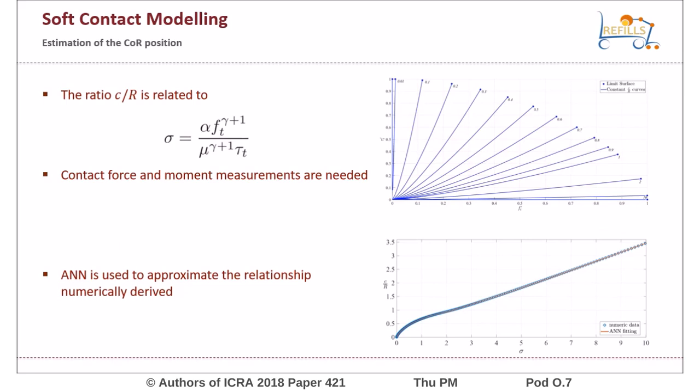In order to model the incipient slip, it is important to estimate the instantaneous core. In the paper, we have numerically found a relationship between the ratio C over R and this variable σ, which depends on the measured Ft and τ. A neural network is then used to approximate the relationship.